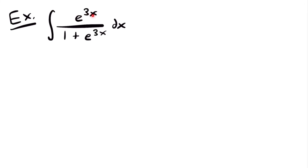Next we have the integral of e to the power of 3x divided by 1 plus e to the power of 3x, times dx. You might think to set 3x equal to u, but that won't work here because we have two exponential functions of e to the power of 3x, so setting that exponent equal to u won't simplify things. Unlike the previous example, we have only one term in the numerator and two in the denominator, so we can't split into separate fractions either.